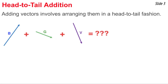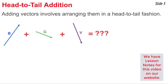To add right angle vectors, you need to understand the basic method of adding any vectors, whether they be at right angles or not. That brings us to a quick review of the head-to-tail addition of vectors. Here we see vectors B, G, and V, and we wish to add them to determine the resultant.